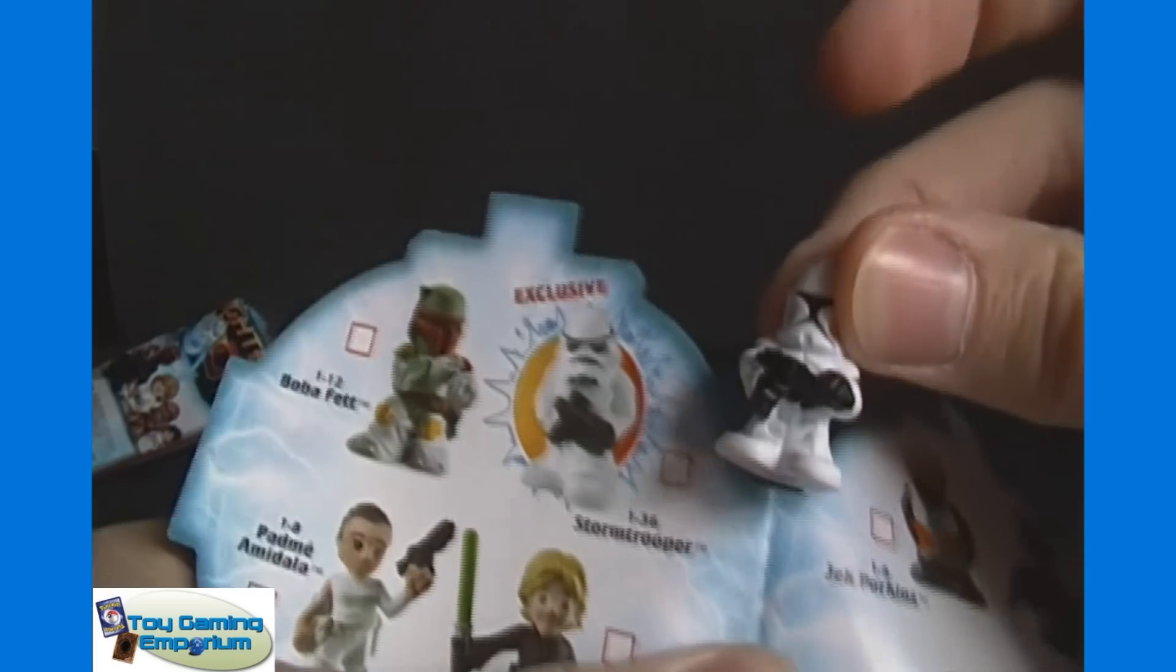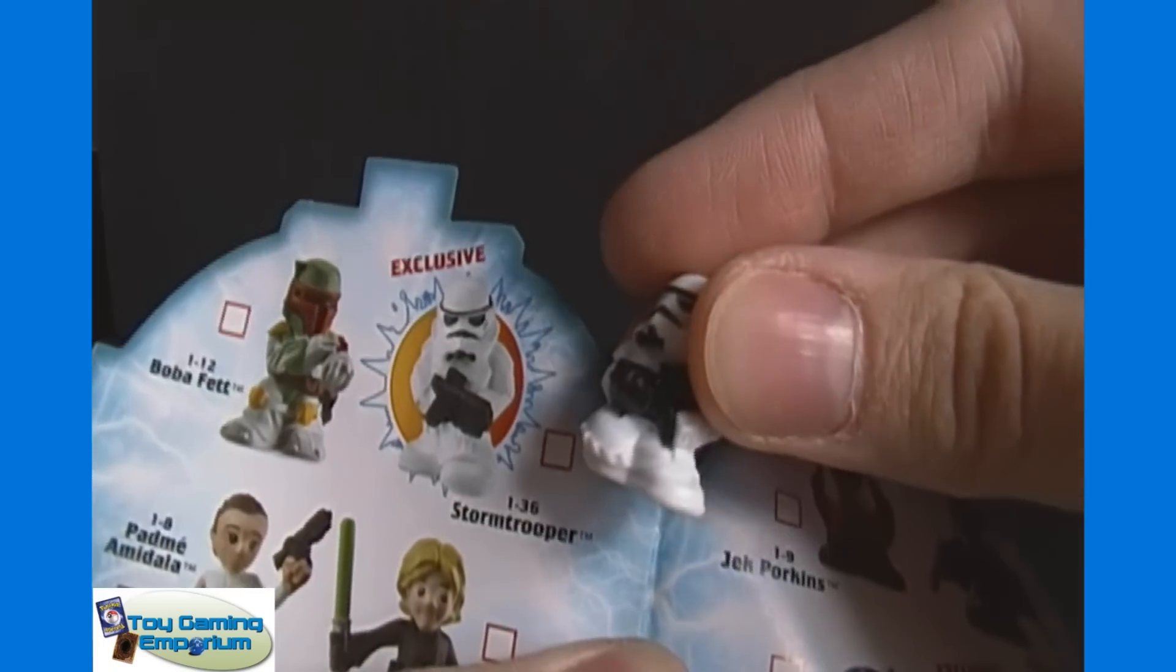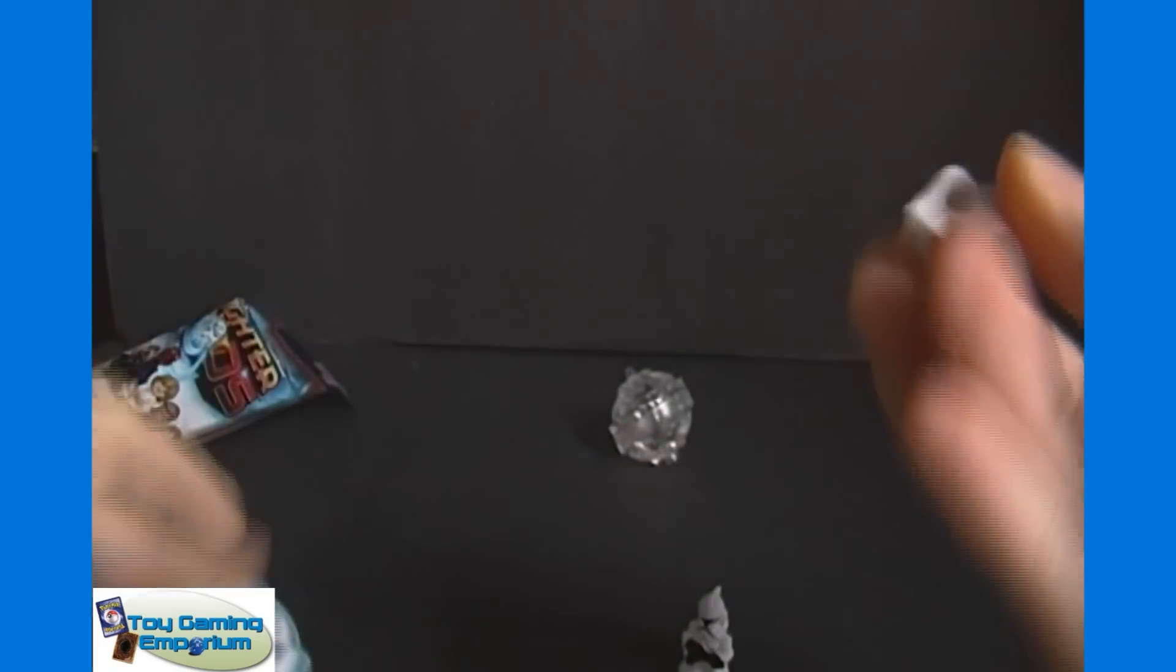And basically, this clone trooper looks like this storm trooper as far as how he's holding the weapon. And this storm trooper has that one like reversed. So. Anyways.